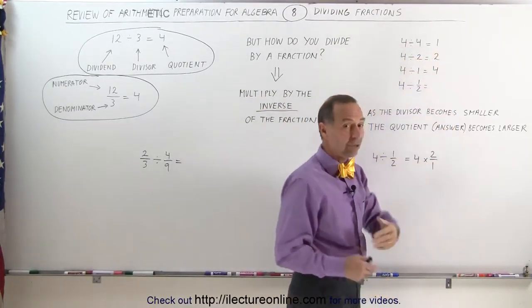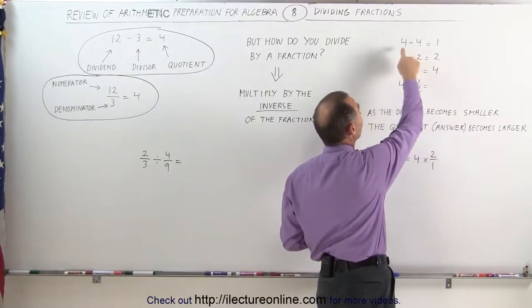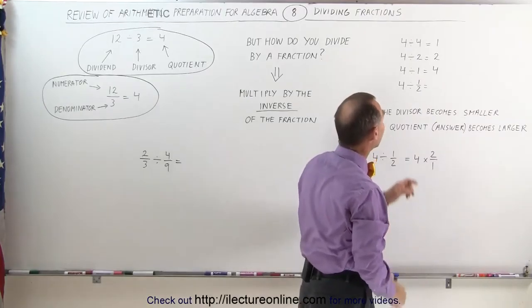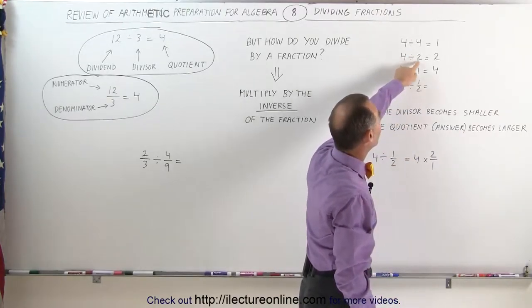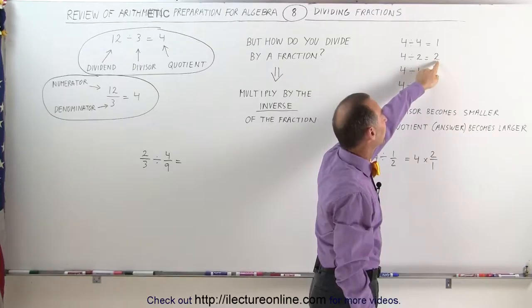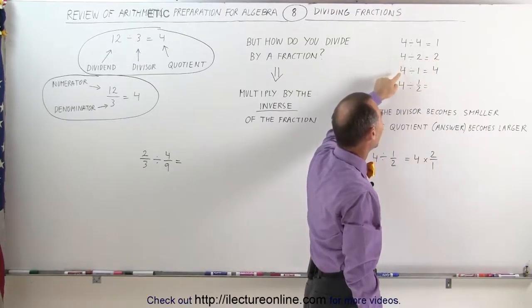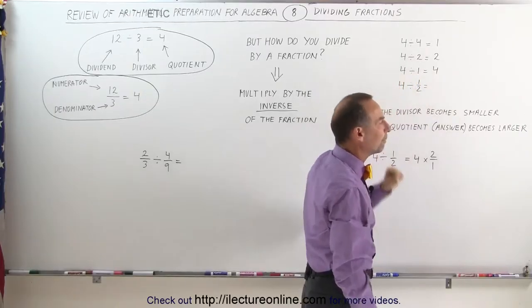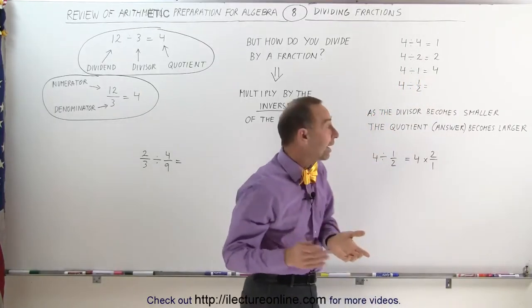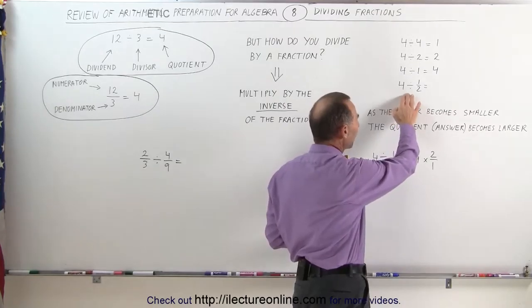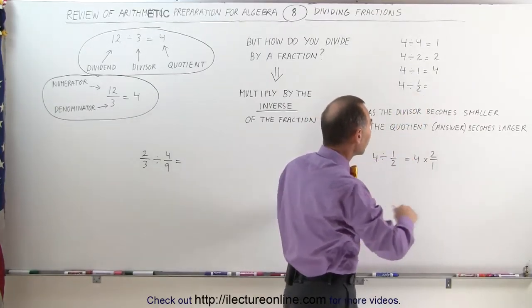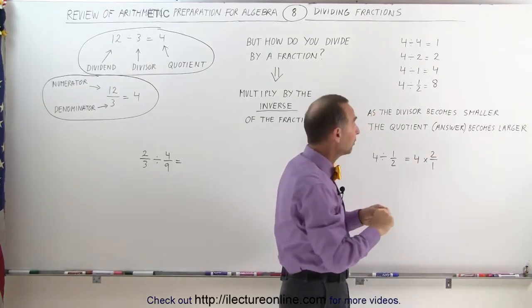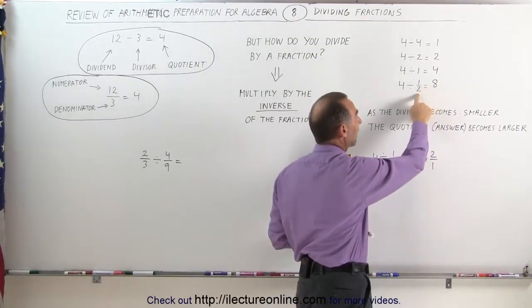Now let's walk over here and take a look at these numbers. Notice when you take the number 4 and divide by 4, you get 1. The reason why that is true is because when you multiply the answer, the quotient, back with the divisor, you get the dividend back. So 1 times 4 equals 4. Same when you divide 4 by 2: 4 divided by 2 is 2, because 2 times 2 equals 4. 4 divided by 1 is 4, because 4 times 1 gives you 4. But what happens when you try to divide by a fraction?